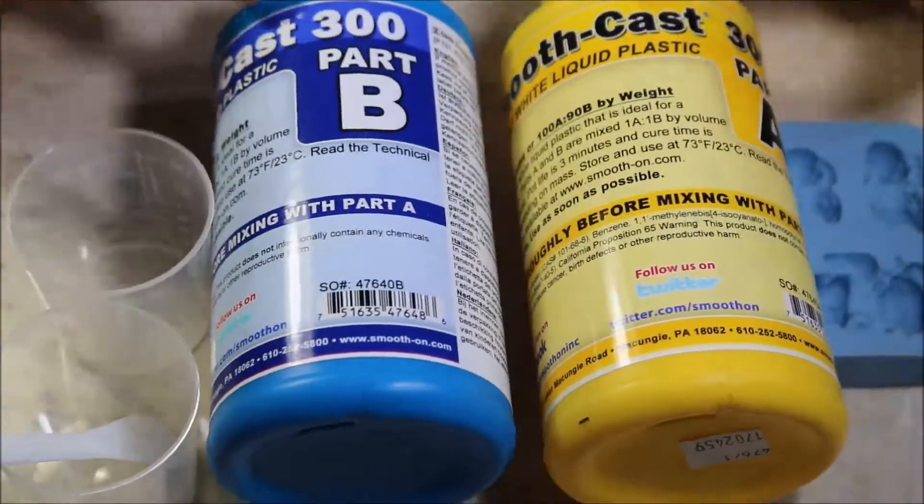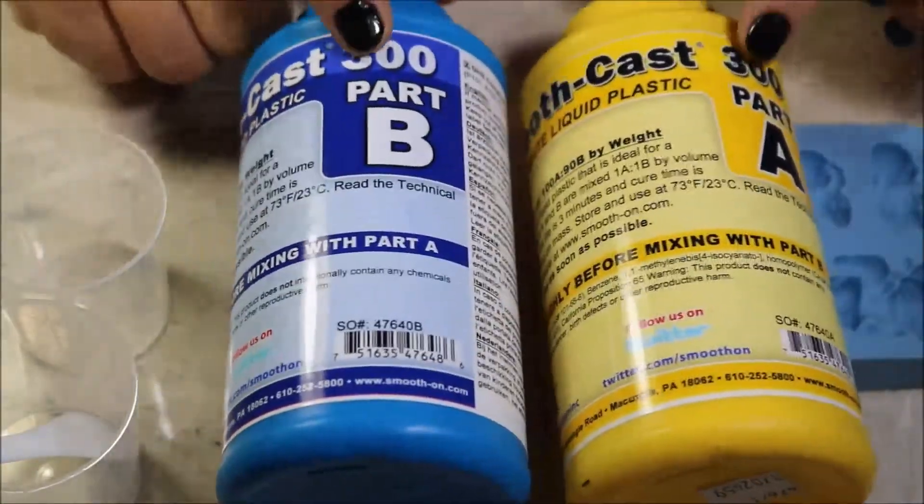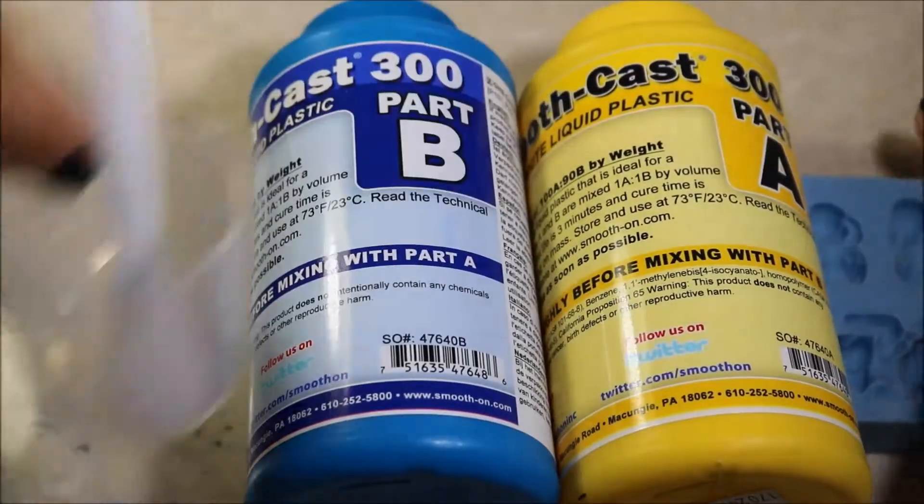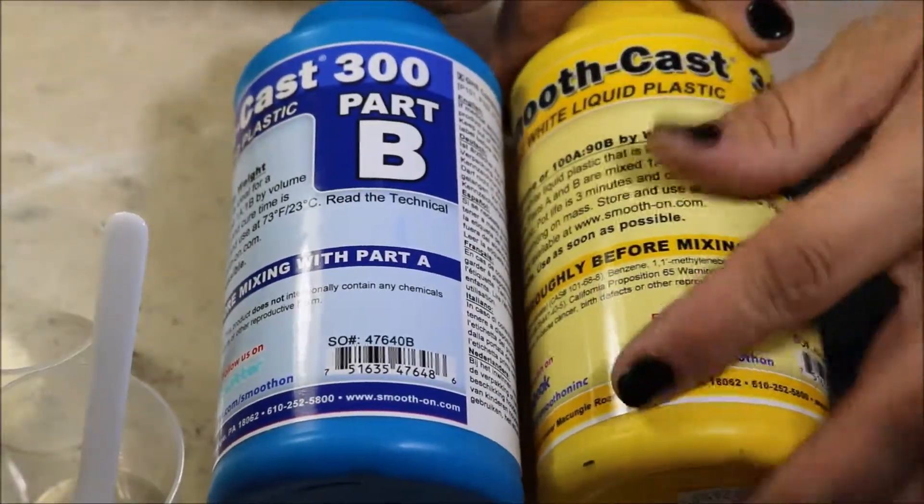Good morning friends! I have some SmoothCast 300 Part A and B, and I have a baby mold, a fondant baby mold, some mixing cups. Three minutes to mix, and cure time is ten minutes. I'm going to use an ounce of each.